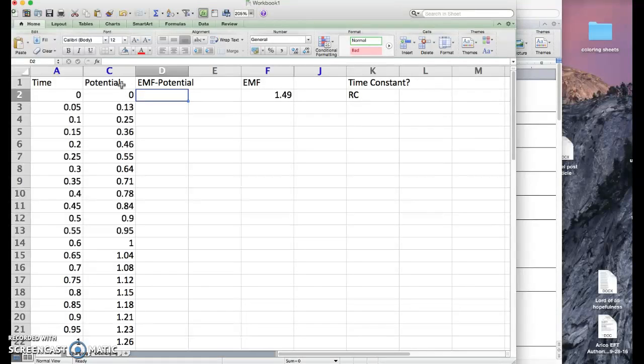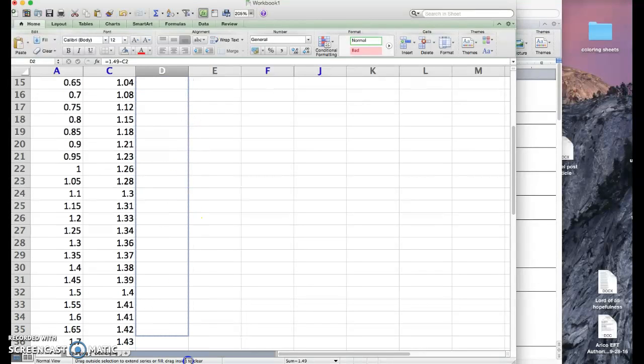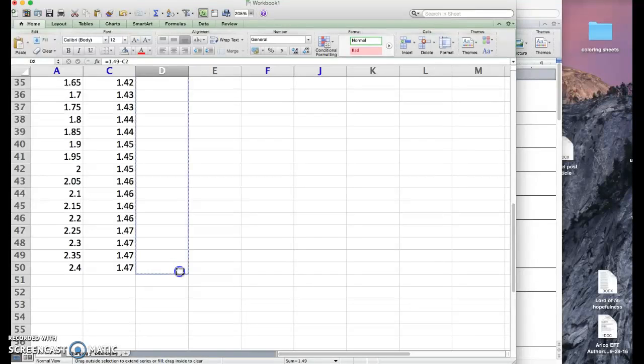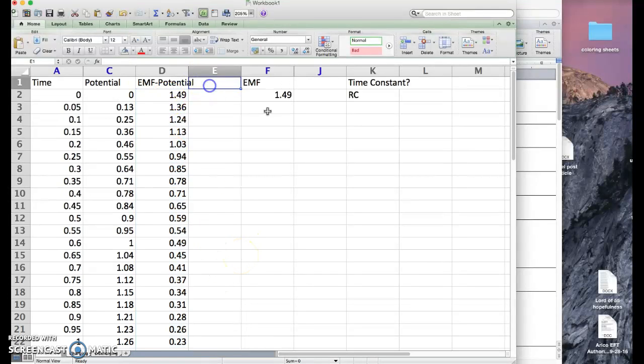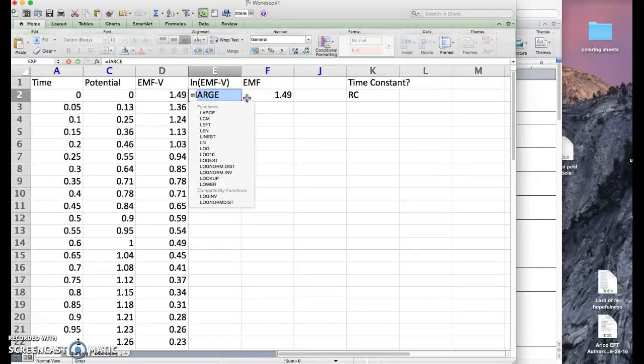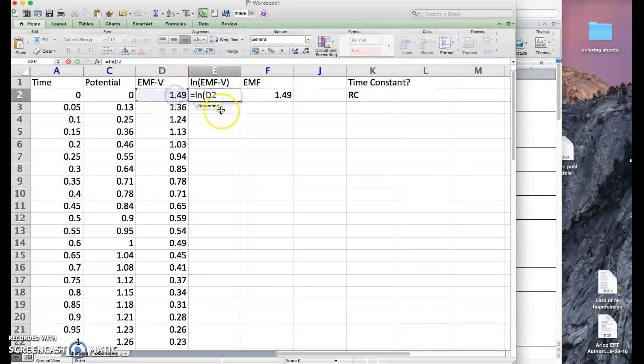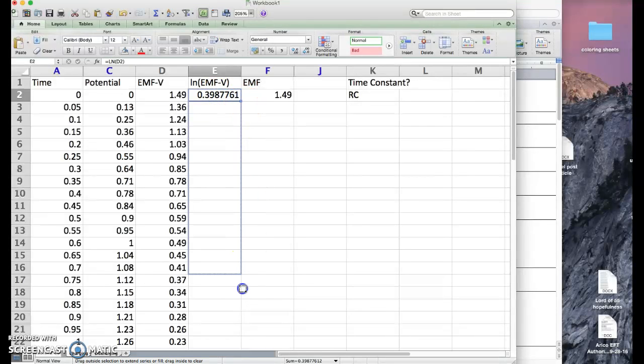I'm going to make one column here be EMF minus potential. I'm going to use Excel to make my life easier. Equals, my EMF is 1.49, so I would put equals 1.49 minus potential. Then we can just drag this down. Oh, the wonders of modern technology. And there we have it. Now we want natural log of EMF minus V. So equals, Excel does have a natural log function. There it is. Drag it down.